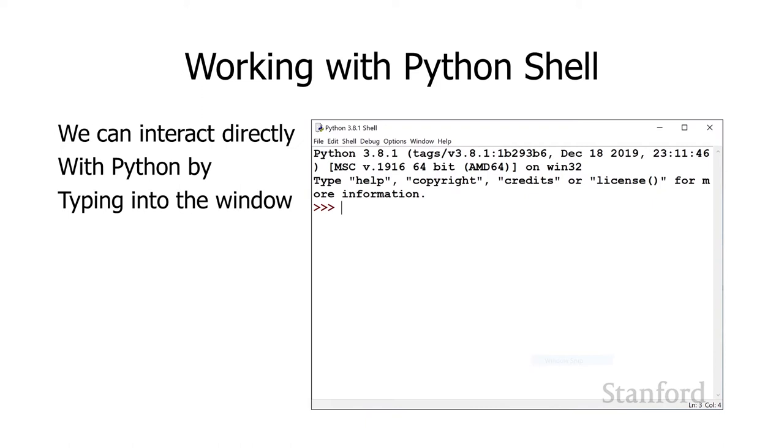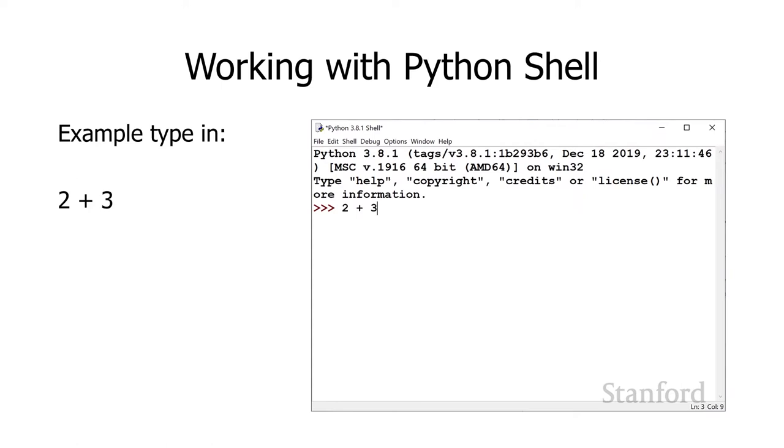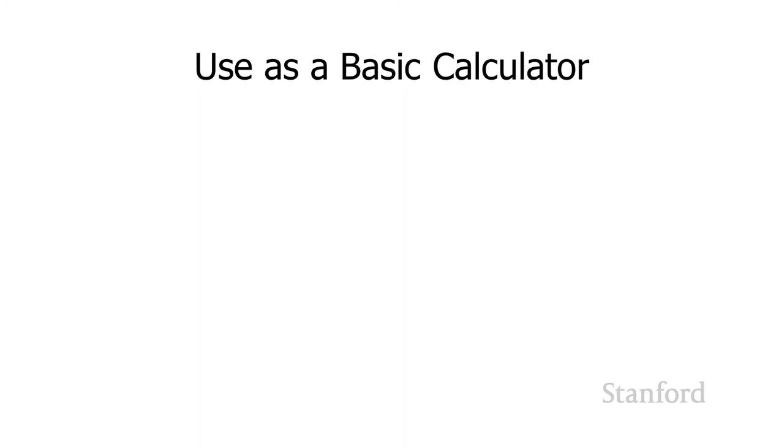We can just interact directly with Python by typing into this window. That's actually what a shell is. If I type something like 2 plus 3 and I hit return, Python's going to respond with 5. We can use this Python interactive shell as a basic calculator.